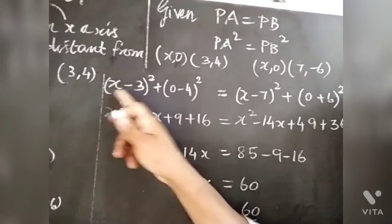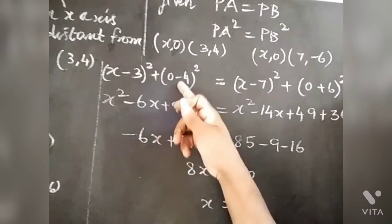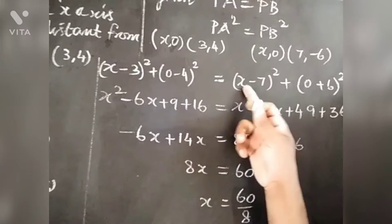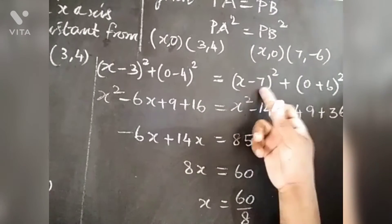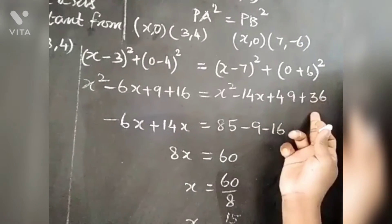a² - 2ab is -6x + 9, and -4² is 16. a² - 2ab is -14x, and 6² is 36.